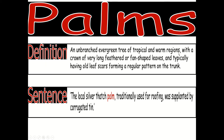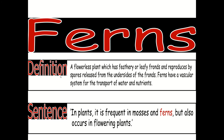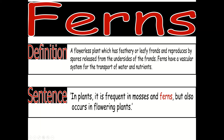Palms — an unbranched evergreen tree of tropical and warm regions with a crown of very long feathered or fan-shaped leaves, and typically having old leaf scars forming a regular pattern on the trunk. The local silver thatched palm, traditionally used for roofing, was supplanted by corrugated tin.